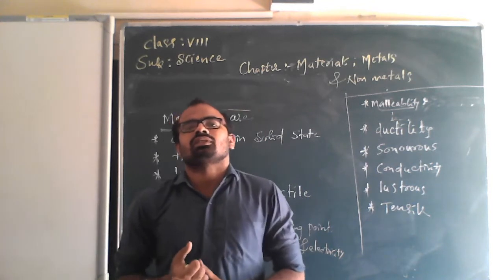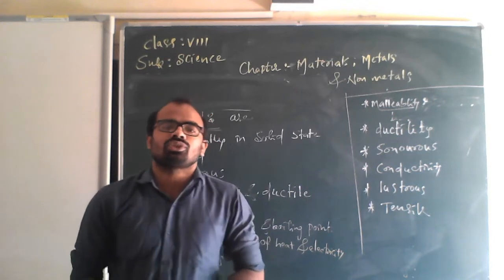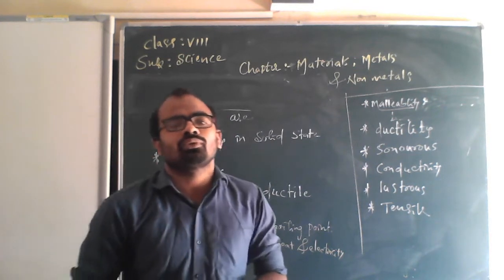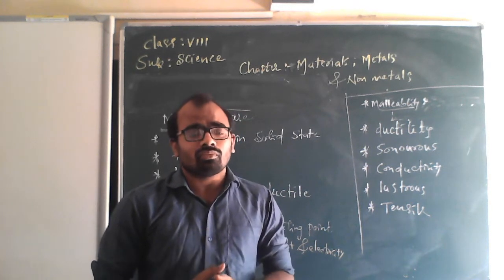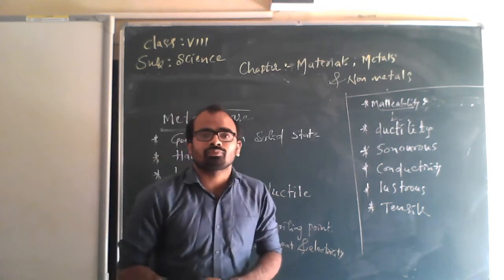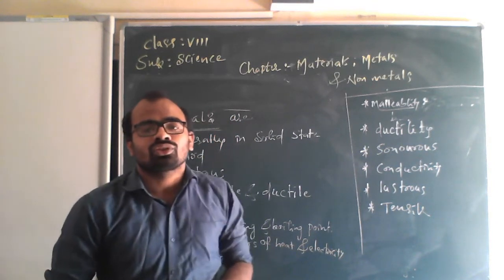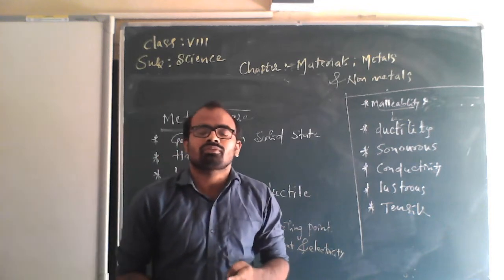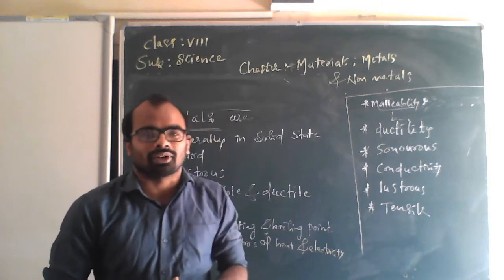There are 18 chapters in your NCERT science book, and we will see those chapters one by one. I am going to start with the first chemistry chapter, which is present in your NCERT textbook. This is the 4th chapter — Materials: Metals and Non-Metals.